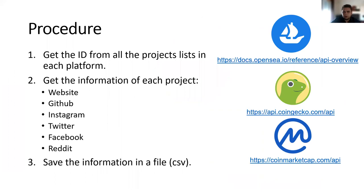The APIs used to extract information were the OpenSea API, the CoinGeek API, and the CoinMarketCap API. First, we need to get the ID from all the projects listed in each platform. Second, for each project, get the information like website, GitHub, and so on. And finally, save the information in a file.